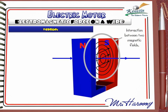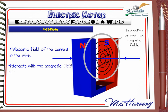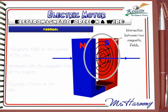This overlap causes an interaction between the two magnetic fields, which causes a force on the wire. So we can explain the force as follows: the magnetic field of the current in the wire interacts with the magnetic field of the magnet, causing a force on the wire.